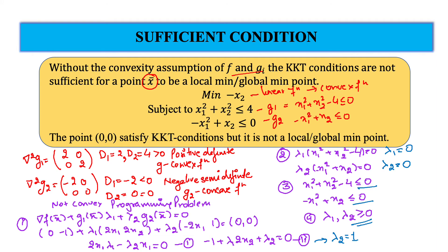But still (0, 0) is not the point of local or global minimum. Why? We can see this graphically. So we will draw a graph. The graph has two constraint regions. G1 is a circle of radius 2, and the inside of the circle is the feasible region for G1, since putting (0, 0) gives a value less than 4.